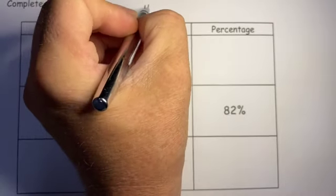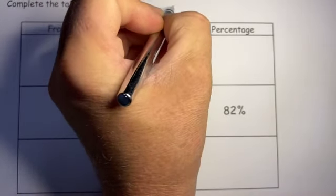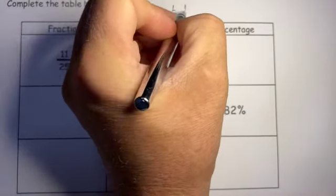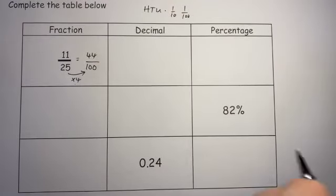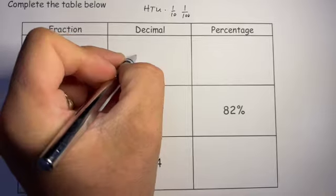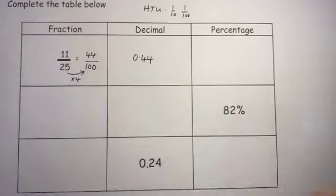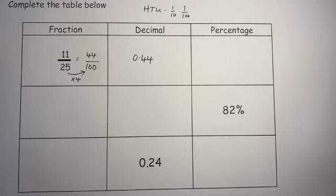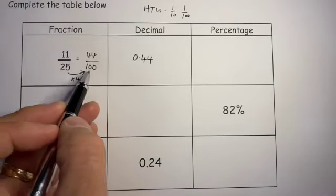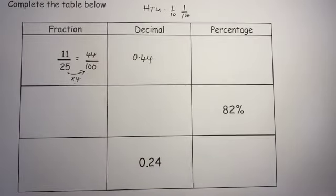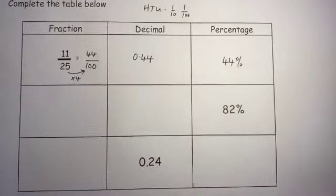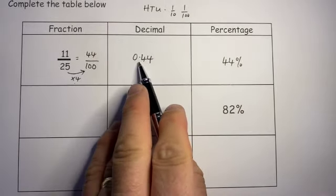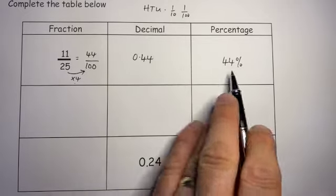So again, you need to know that after the tenths column we have the hundredths column, so what we have here is 0.44. Because it's over 100, I already know the percentage is 44%. But as I said in the previous, it times that by 100, one, two places over, 44.